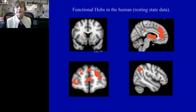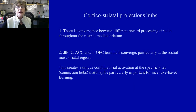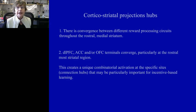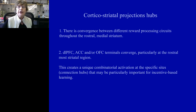We'll return to the idea of different parts of the striatum having convergent inputs later in the talk. In conclusion to this part, we should note that there's a convergence between different reward processing regions, and that the dorsal anterior and orbital cortex also converge especially in the rostral part of the striatum, creating certain sites that may be particularly important in incentive-based learning and may be particularly important switch points that may be affected in disease.